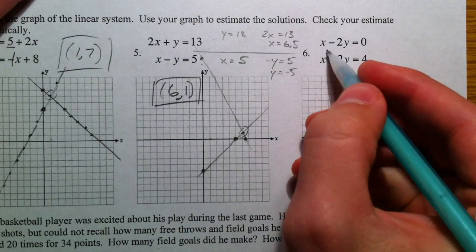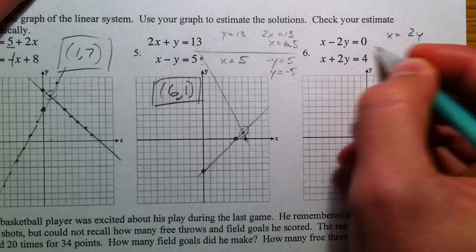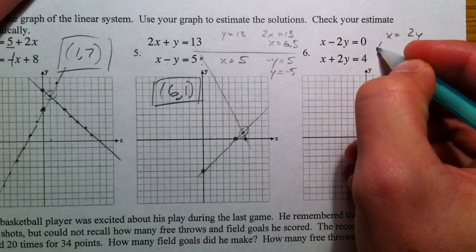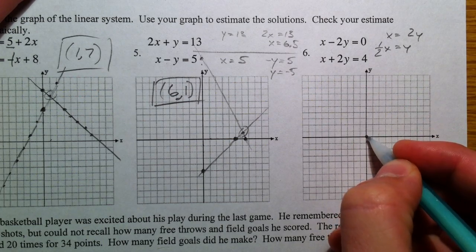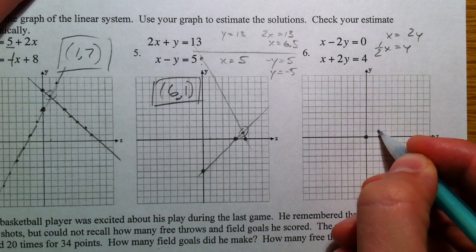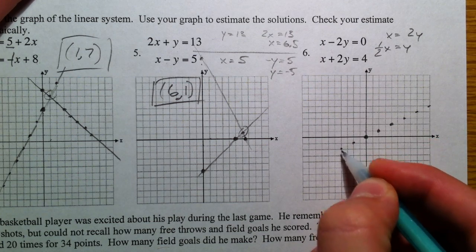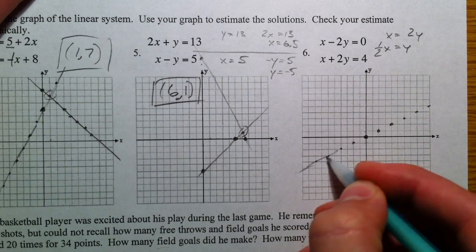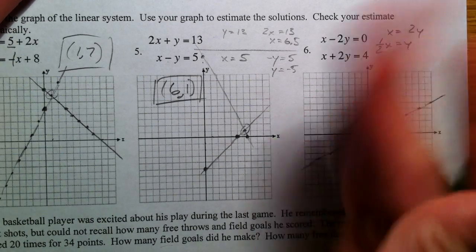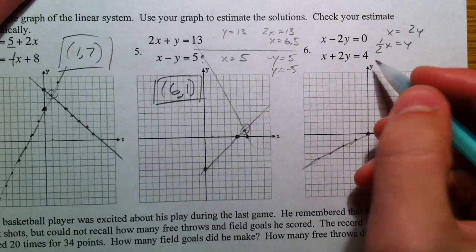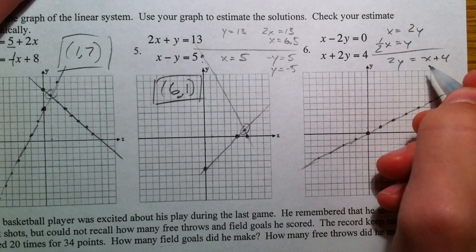One more. So x minus 2y equals 0. I'm going to solve this - x equals 2y if I add 2y over to the other side. And then one-half x equals y. So the y-intercept is 0, up 1 and over 2 because the slope is one-half. Up 1 over 2. So putting it into slope intercept form.